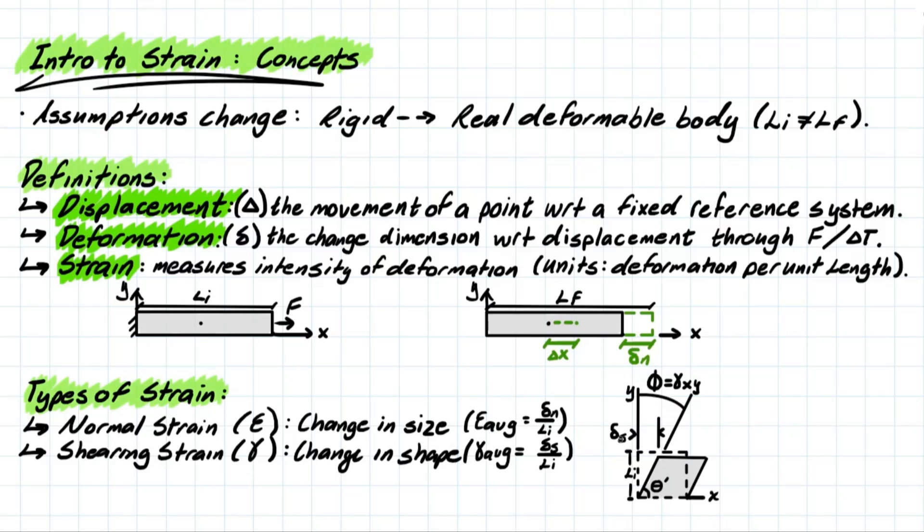Which can be represented in this diagram here. And if we look at the deformation with respect to shearing, we would have a change in shape instead of a change in size. So as the deformation occurs, the element shifts, going from a square into kind of like this parallelogram, if you will. And we take the same type of calculation, except now we're considering a different deformation.